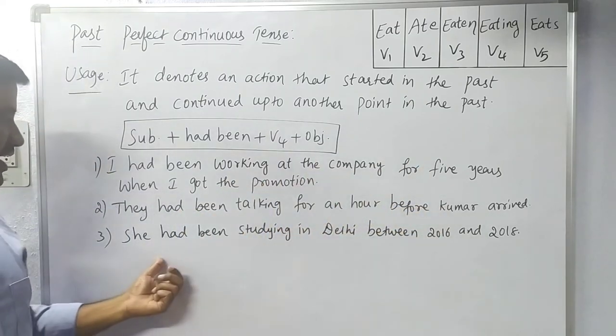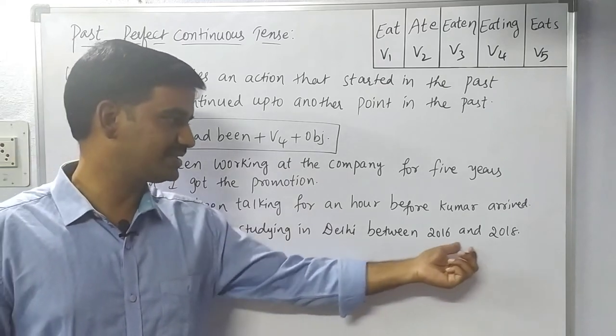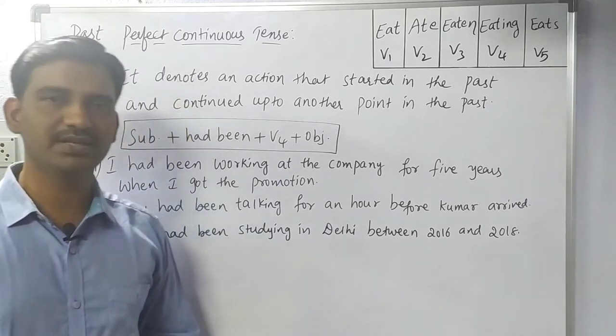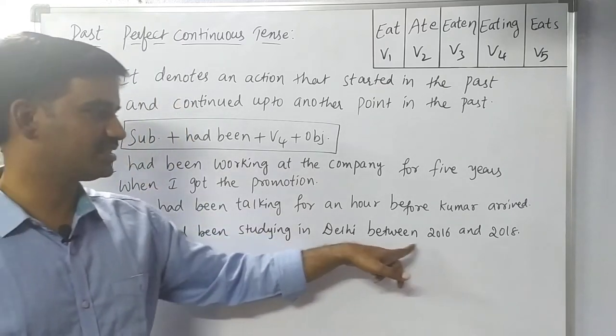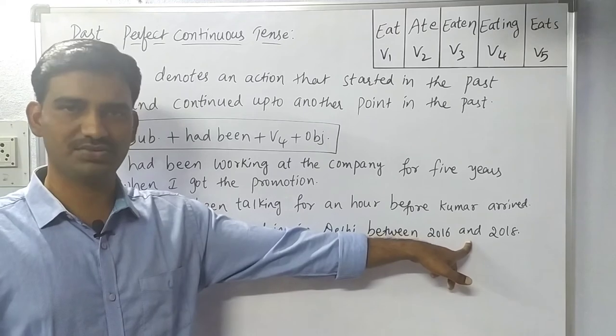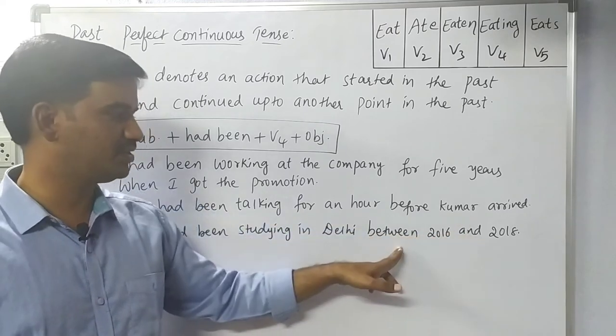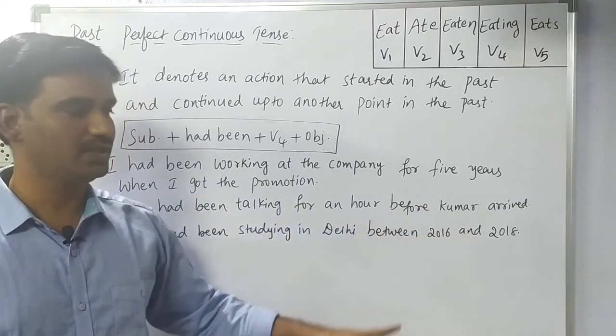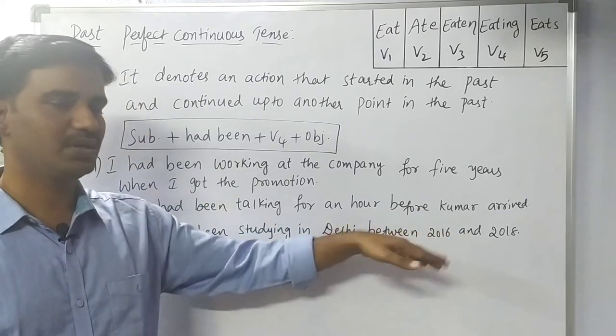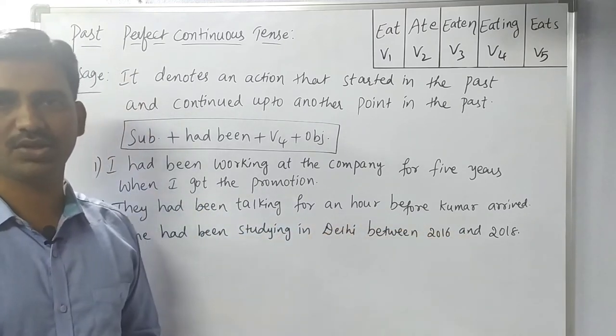Another example: 'She had been studying in Delhi between 2016 and 2018.' Note: 'between...and' is used together, and 'from...to' is used together. Using 'between...to' is grammatically wrong.